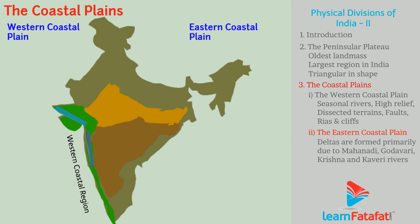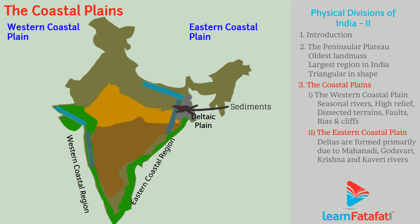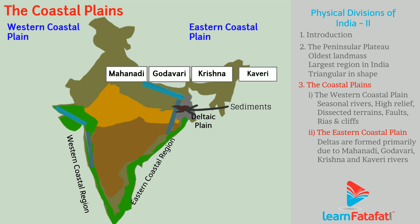The eastern coastal plain is characterized by deltaic plains as its main feature. The deltas are formed due to deposits of sediments by flowing rivers. These deltas are formed primarily by the Mahanadi, Godavari, Krishna, and Kaveri rivers.